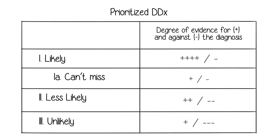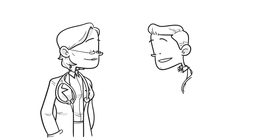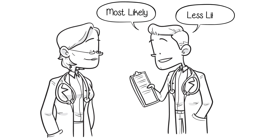The ranking of the diagnoses should be accompanied by the clinical evidence that increases or decreases the likelihood of each proposed diagnosis. In addition, some consideration is expected for the most serious or emergent diseases on the differential diagnosis, or can't-miss diagnoses. An evaluator can monitor the learner's ability to reason by analyzing their spoken or written assessment for the patient's main problems.